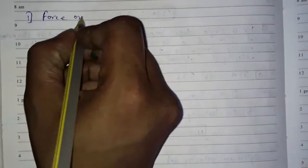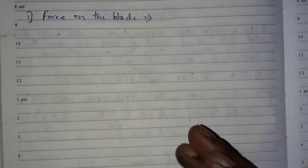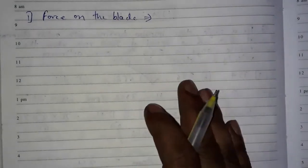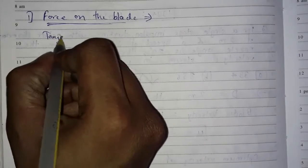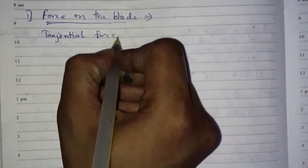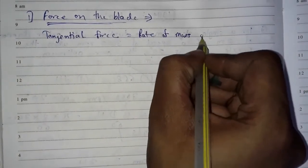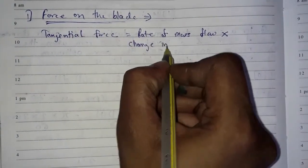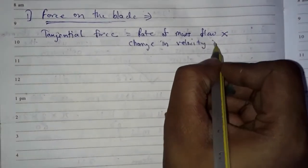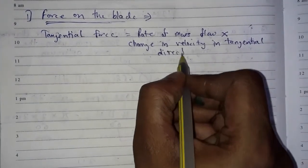First is the force on the blade. By Newton's second law of motion, the tangential force is proportional to the rate of change of momentum. That is, tangential force is equal to rate of mass flow into change in velocity in tangential direction.